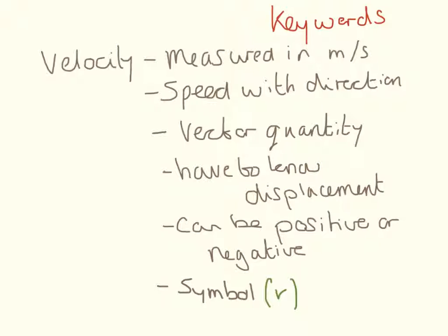So velocity is measured in meters per second. It is speed with a direction. This is a vector quantity and we have to know the displacement of something before we can know the velocity. Because it's a vector quantity, it can be positive or negative and the symbol for it is v.